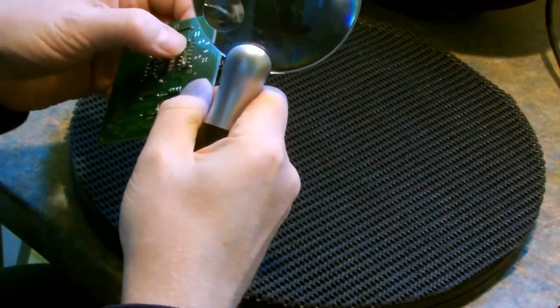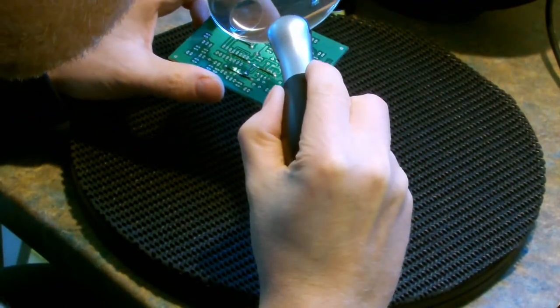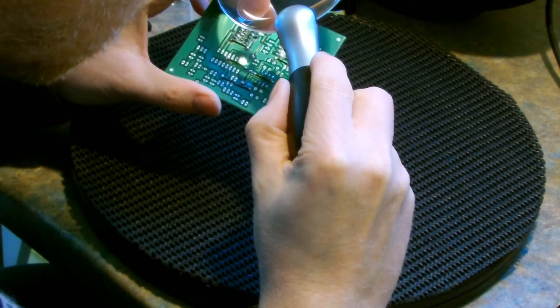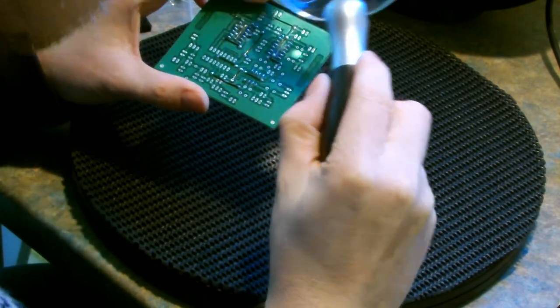Once you've completed some soldering, it's good practice to inspect the joints to make sure they are good quality. I'm using a magnifying glass to do this, and this particular magnifier has an additional high power lens formed into the main lens for extra magnification.